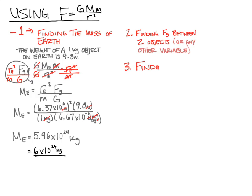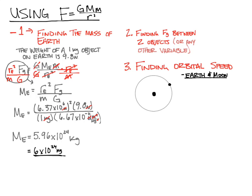The third thing we'll do is find orbital velocity — or orbital speed — using Newton's universal gravitation. Imagine we have the Earth and the Moon: the Earth is in the center, the Moon is going around it. The only force acting on the Moon is gravity, so we use Newton's second law: the net force equals mass times centripetal acceleration. We set GMM/R² equal to mv²/R, because we're going in a circle.